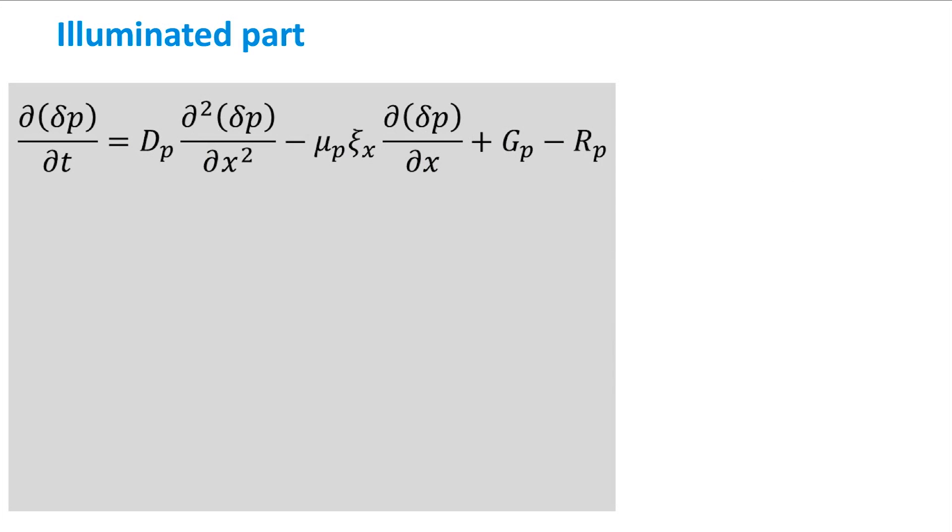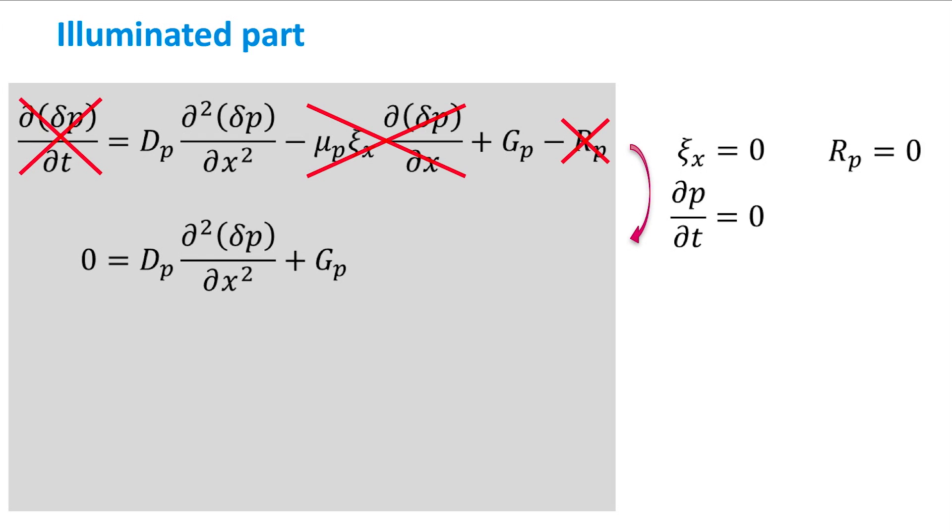We start with the illuminated part. Since there is no electric field, no recombination, and we consider a static or steady state situation, we can remove several terms from the ambipolar transport equation, reducing this to the following differential equation. When we solve this differential equation, we obtain the following equation where c1 and c2 are integration constants.